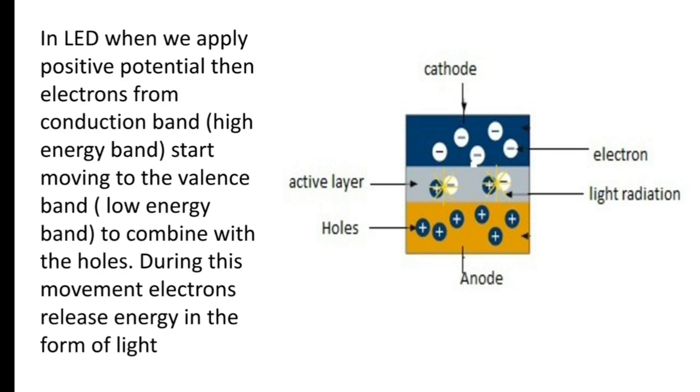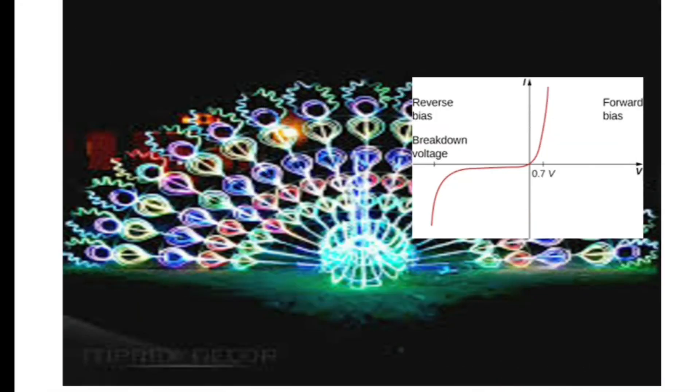In LED, when we apply positive potential, then electrons from conduction band, that is high energy band, start moving to the valence band, that is low energy band, to combine with the holes. During this movement, electrons release energy in the form of light. So, since electron has to move from high energy band to low energy band, it releases energy and that energy we can see in the form of light.